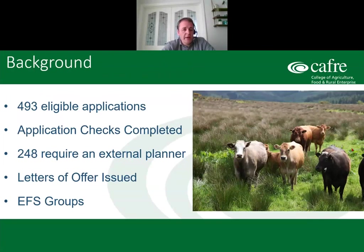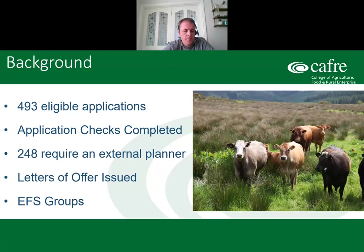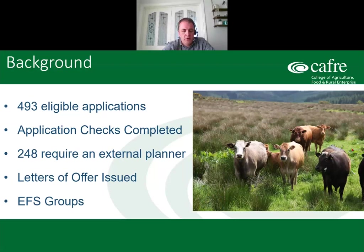This is Tranche 6. We had 493 eligible applications for EFS Higher. Once those applications were made, various checks were completed, and it became clear that about 248 of these applications require an external planner - which is really why we're here tonight. Letters of offer were then issued to those eligible applicants. If you are in an EFS group, make contact with your group facilitator as soon as possible, as they may be able to offer you the planner service.